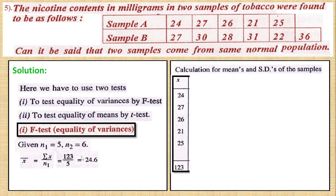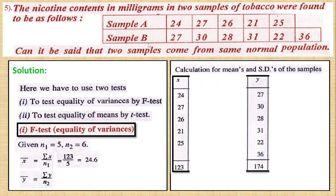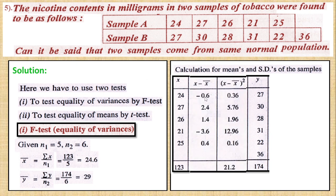Next we will look at y-bar. For sample B, we denote the values as y. Adding all the y values, the total is 174. So 174 divided by 6 gives 29. Now we calculate (x − x̄) and (x − x̄)² columns. Since x-bar is 24.6, we subtract each x value from x-bar.